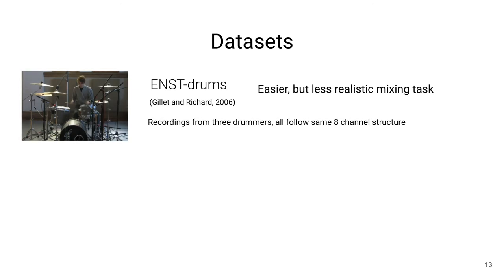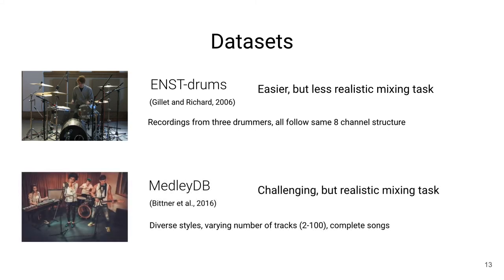We also consider two different datasets in this task. First, the ENST drums dataset, which is an easier but less realistic mixing task, because there are recordings from three drummers that all follow the same eight-channel structure — kick drum, snare drum, and so on. But more realistic is MedleyDB, which is much more challenging. That dataset has complete songs with diverse styles and a varying number of tracks from two all the way up to 100, so our system needs to handle this variability across different genres.